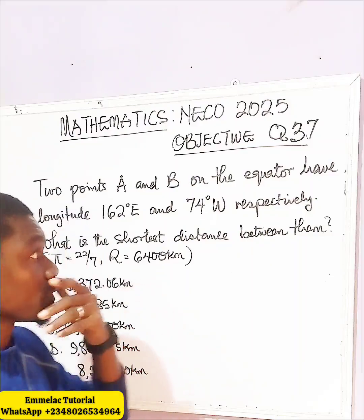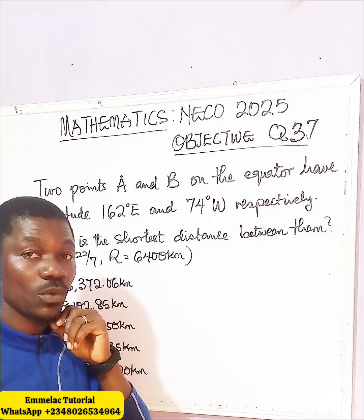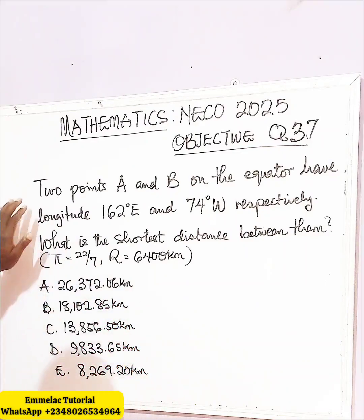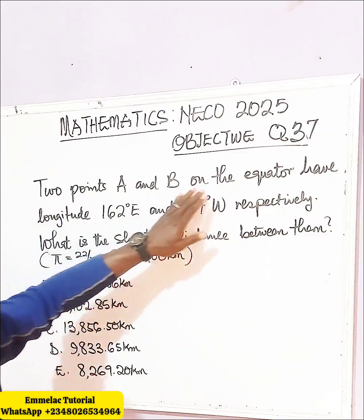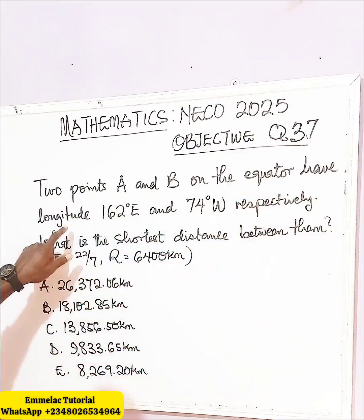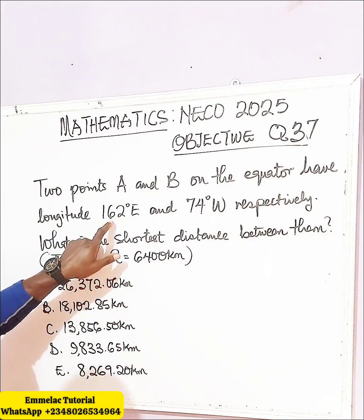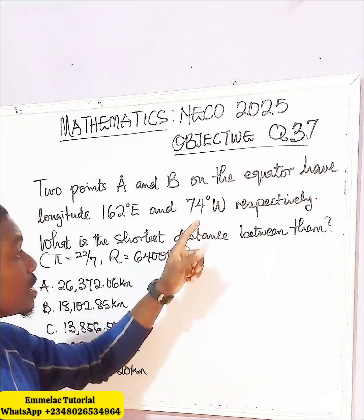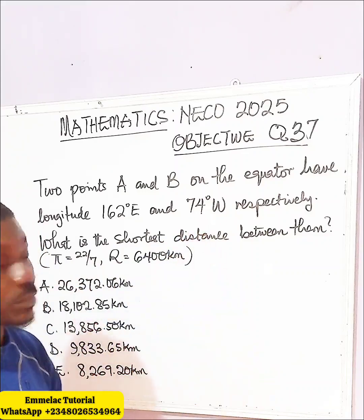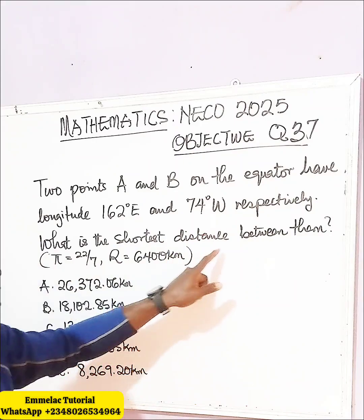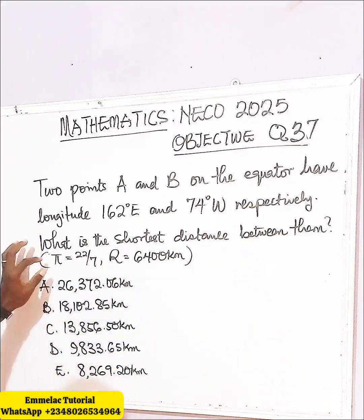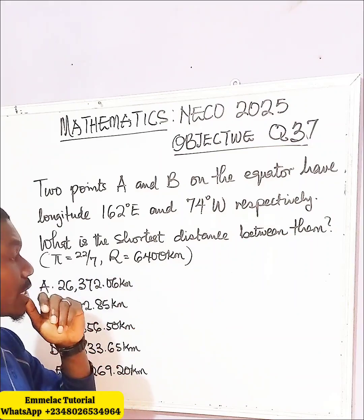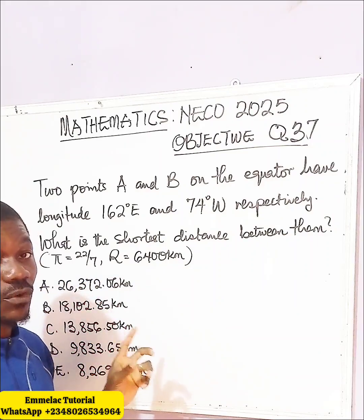Welcome to Winlock online tutorial. Let us look at question 37 of the NERCO 2025 objective question. Two points A and B on the equator have longitudes 162 degrees east and 74 degrees west respectively. What is the shortest distance between them? We are given that pi is 22 over 7 and the radius of the Earth is 6,400 km.